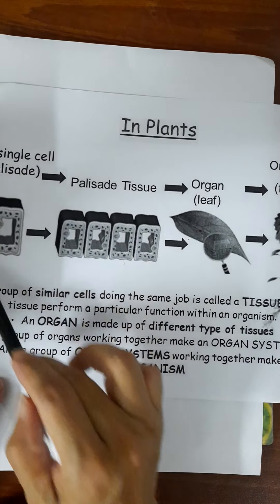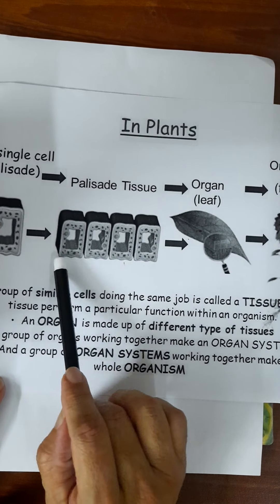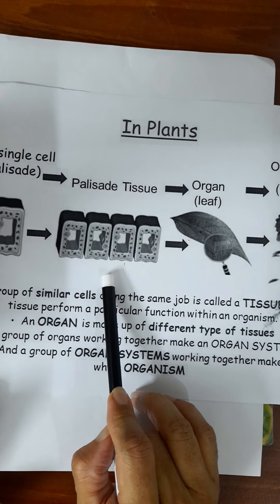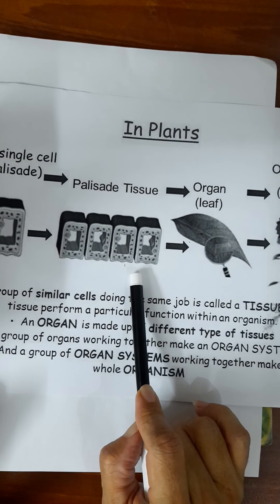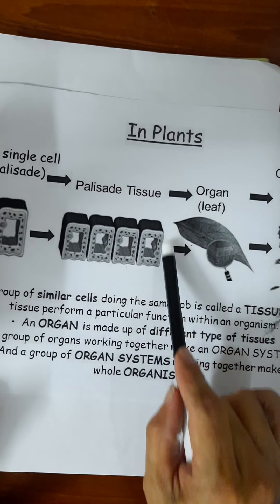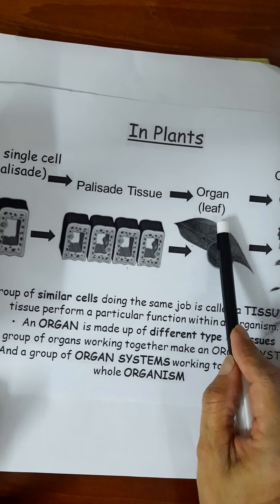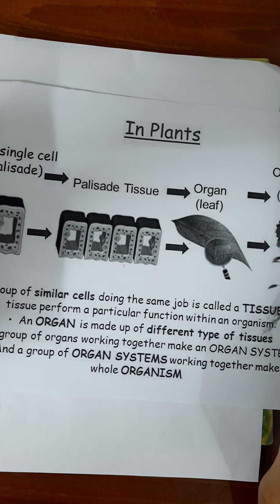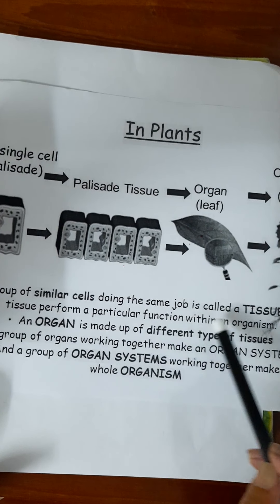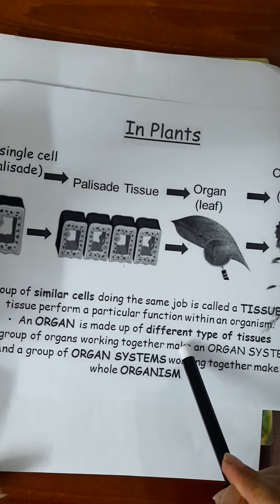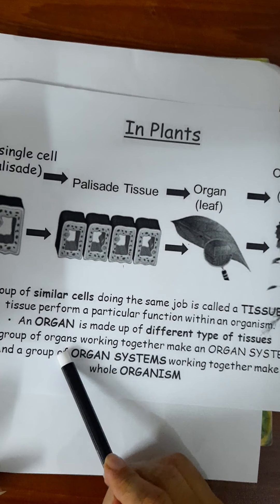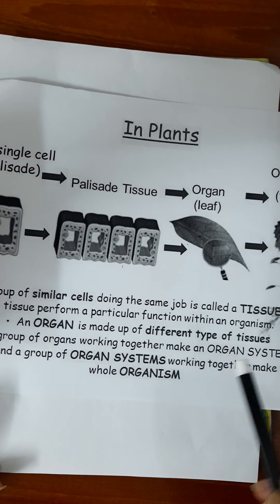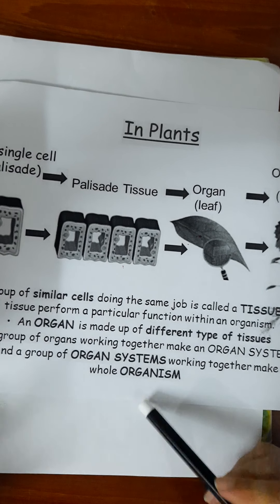The levels of organization also apply to plants. A typical plant cell is the starting point. Similar cells — similar in size, shape and structure — making a tissue with the same job. Different tissues combine to make an organ, like the leaf. Different organs such as the flower, leaves, buds and fruits combine to make an organism. A group of organs working together with the same function makes an organ system, and a group of organ systems working together makes a whole organism.